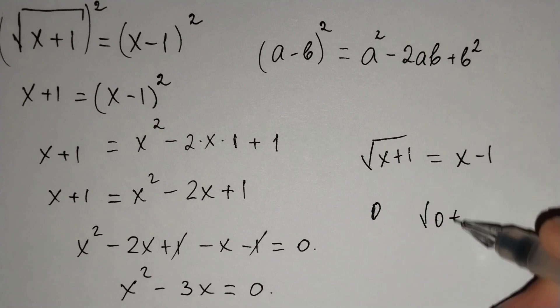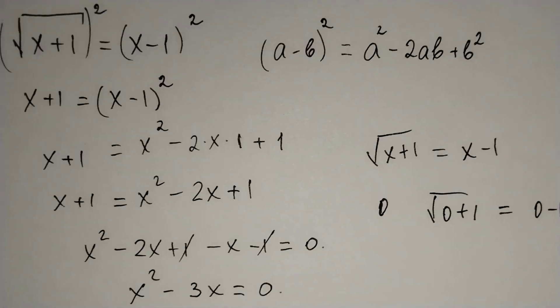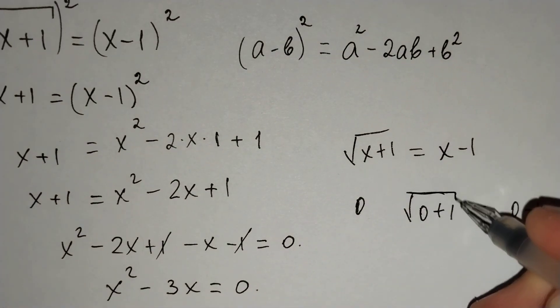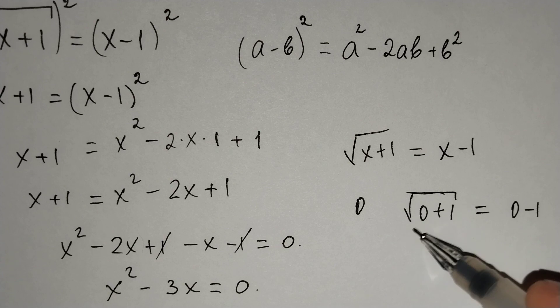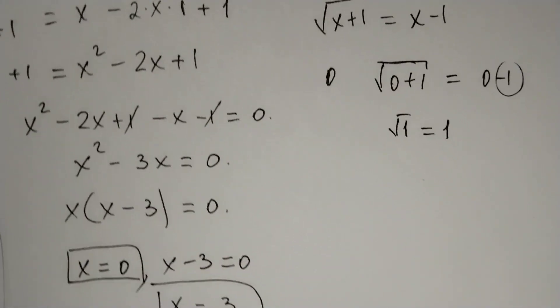square root of 0 plus 1 equals 0 minus 1, or no? This is not true because the square root of 1 equals 1, not minus 1. That's why x equals 0 is not our solution.